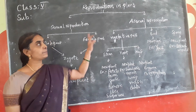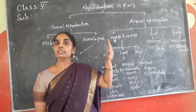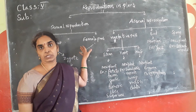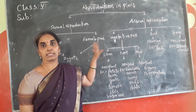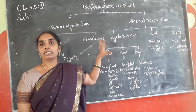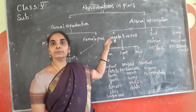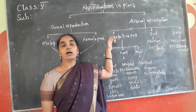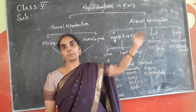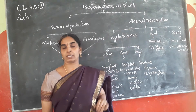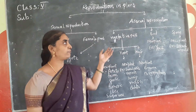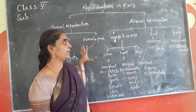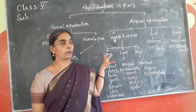In asexual reproduction, there are no sexual features — no male and female parts. It takes place either through the vegetative parts, or by budding process, or by sporulation, that is by formation of spores. I will tell you in detail about all these things.